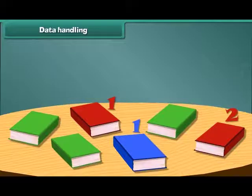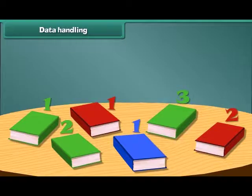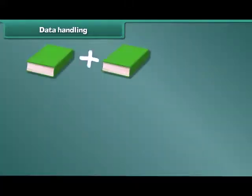How many green colored books do you see? 1, 2, 3. There are 3 green colored books.